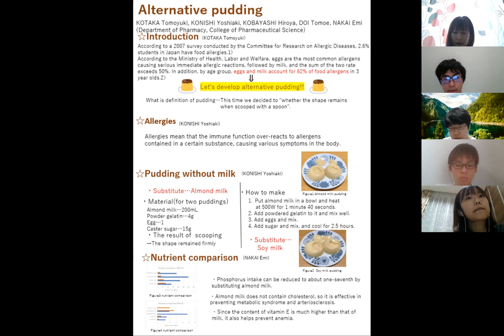When I added 2g powdered gelatin, it didn't harden, so please add 4g powdered gelatin. Figure 1 shows the almond milk pudding. When I scooped it with a spoon, the shape remained properly. It tastes almost the same as standard pudding, but has a slight almond taste. It is also recommended for those who want a slightly different pudding than usual.